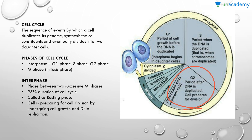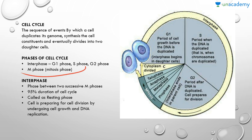In adult animals, some cells do not exhibit any division. After G1 phase, they enter into an inactive stage called the quiescent stage, or the G0 stage of the cell cycle. In this stage, the cells are metabolically active but they do not proliferate.